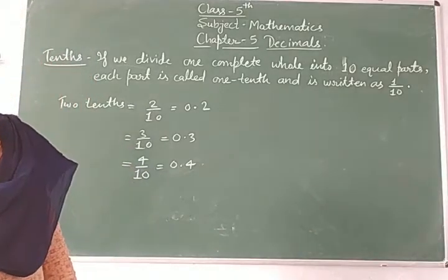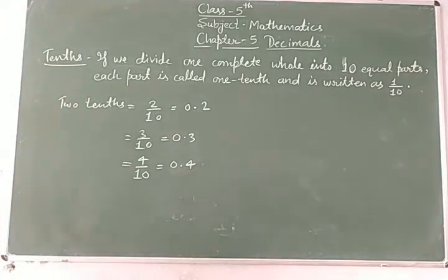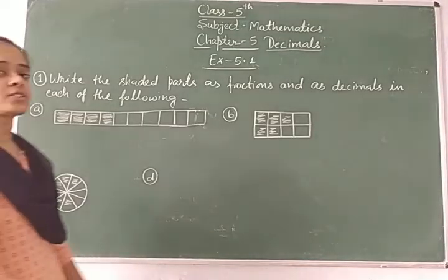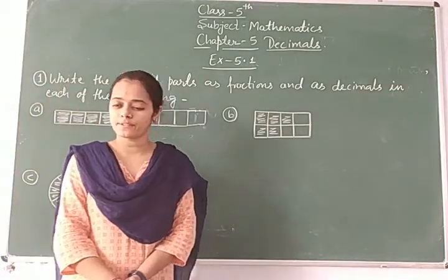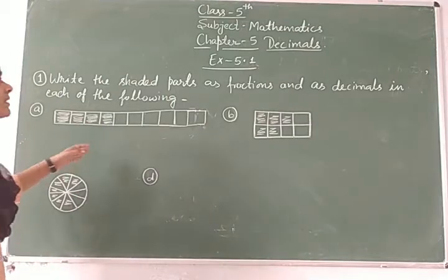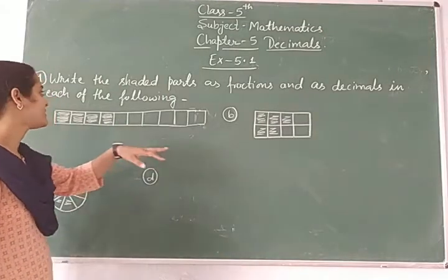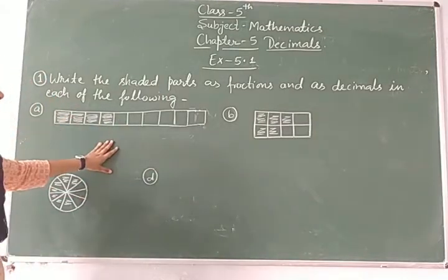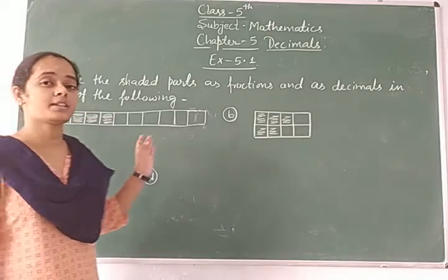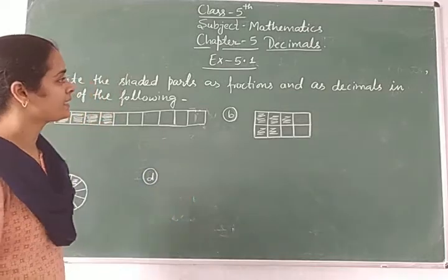Now let's continue our exercise 5.1. Students, let's continue with question number one of exercise 5.1. The question is: write the shaded parts as a fraction and as a decimal in each of the coin lines. Means, write the shaded parts as a fraction and as a decimal.